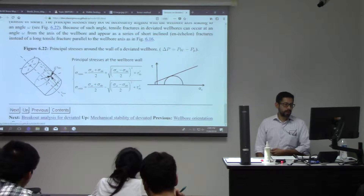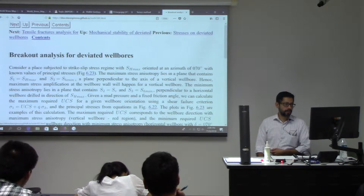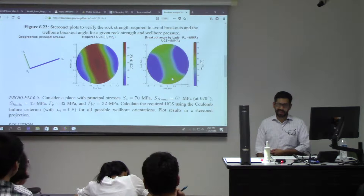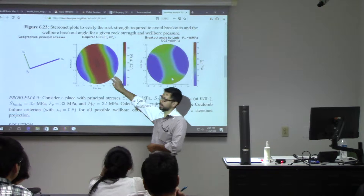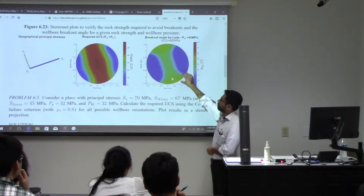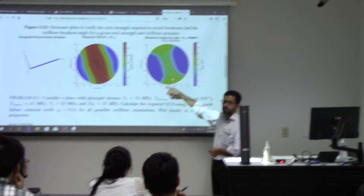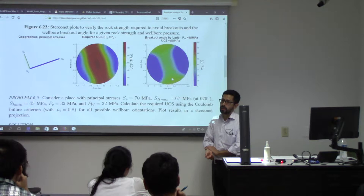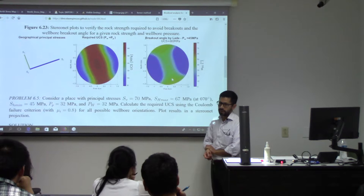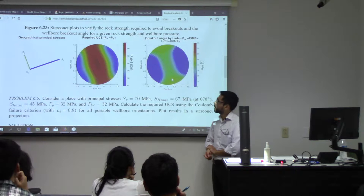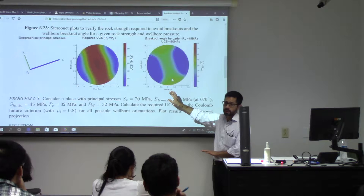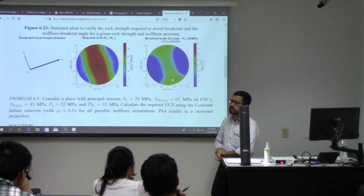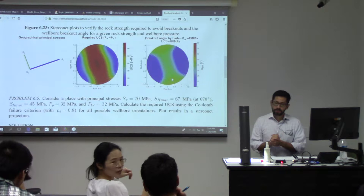Something else about this homework: for this solution for UCS, this is the easiest one — try to do this one first. This is for breakout angle. Your rock is a little bit weaker, so for some solutions you may get a breakout angle of 180 degrees in every direction — that's your solution, that's okay, just report that. For reverse faulting especially, those stresses are too high and you may get that it's not stable for any direction at all. That could be okay according to those stresses.